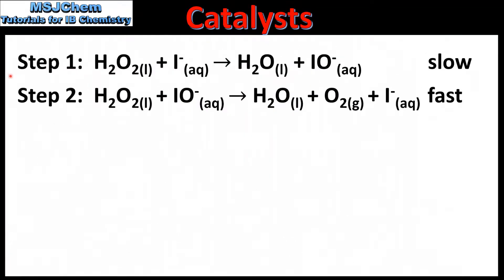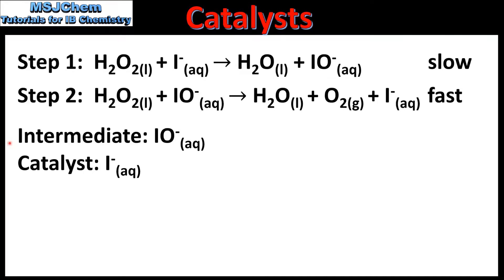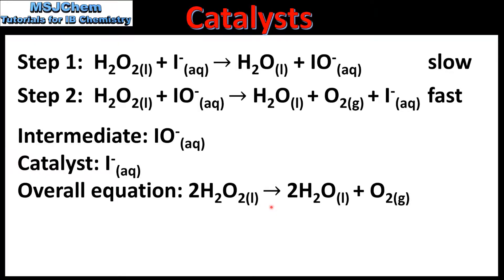Next we look at our second example. Once again we have a two-step mechanism with the first step being the slow step. In the reactant side of the first step we see the reaction between a molecule of hydrogen peroxide and an iodide ion. Looking at the product side of the second step we can see the regeneration of the iodide ion. Therefore we can deduce that the iodide ion is acting as the catalyst in the reaction. We can also identify the intermediate in the mechanism, which is the hypoiodide ion. Note that neither the intermediate nor the catalyst appear in the overall equation.